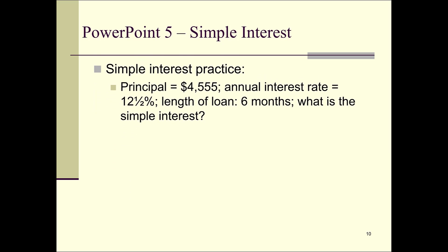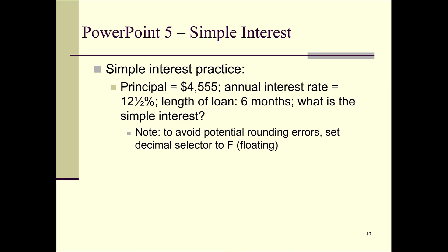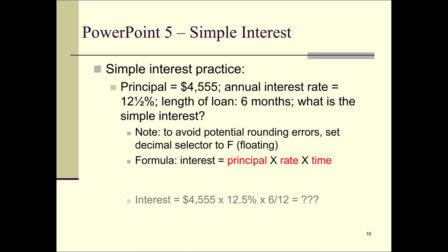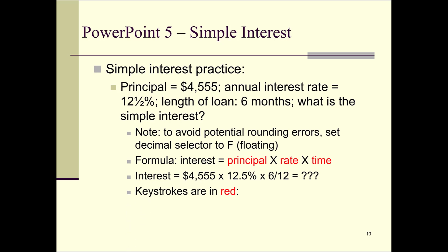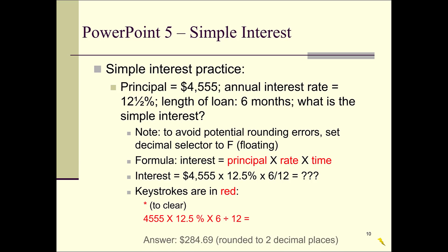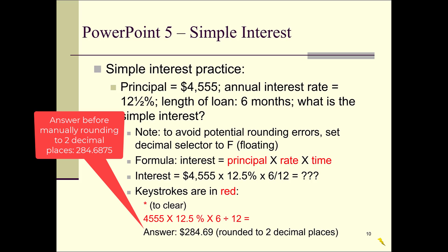Let's do another one. The principal is $4,555, the annual interest rate is 12.5%, and the loan is for six months. To avoid rounding errors, set your decimal selector to F for floating. The formula is principal times rate times time, so we get 4,555 times 12.5% times 6 divided by 12. The keystrokes are: clear, 4555 times 12.5, hit percent, times 6, divided by 12, equals. Rounded to two decimal places, the answer is $284.69.